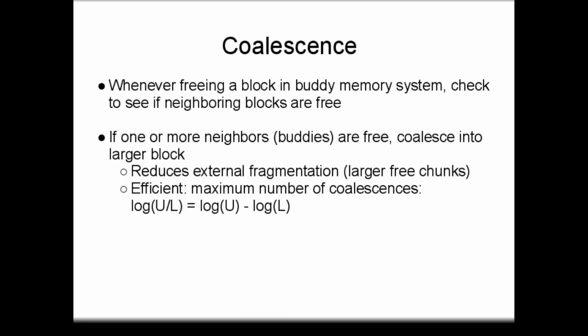For example, a system with a maximum block size U of 4096 bytes, or 2 to the 12, and a minimum block size of 512 bytes, or 2 to the 9, will require at most three coalescence operations to recreate the superblock. Returning a single 512-byte block whose neighboring 512-byte buddy is free will cause the two blocks to be coalesced into a single 1024-byte block. If the neighboring 1024-byte block is free, the two 1024-byte blocks will be coalesced into a 2048-byte block. Then, if a buddy 2048-byte block is free, the third coalescence will produce a 4096-byte superblock.